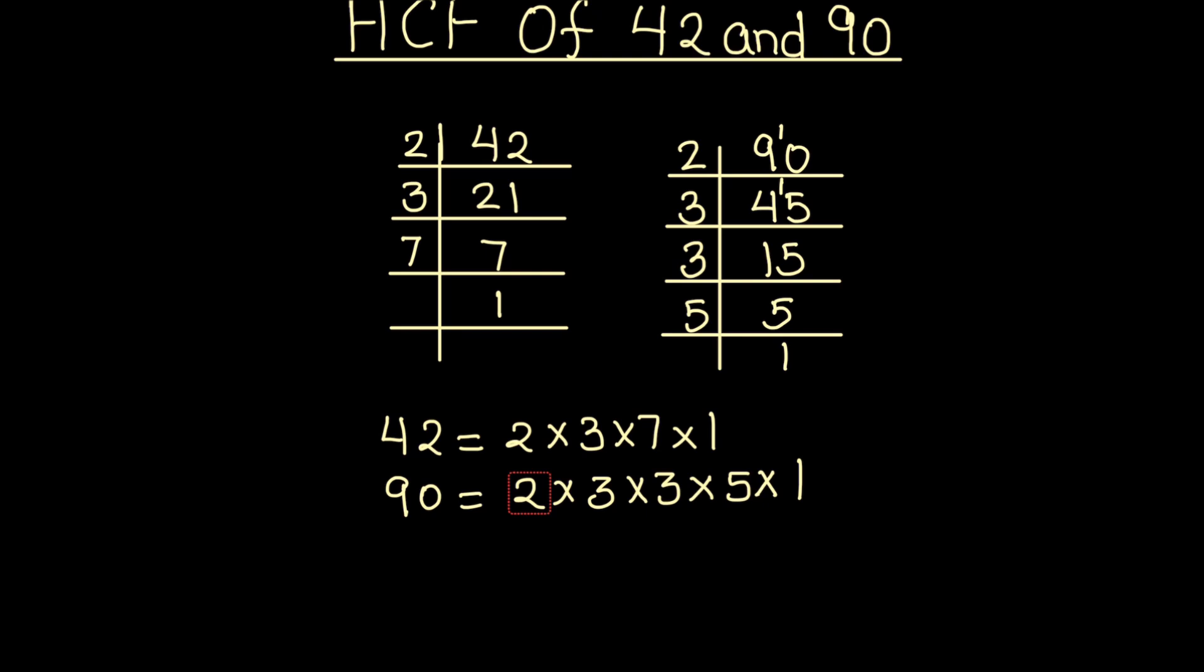The common factors here are 2, as it is in both numbers, and 3 is also common to both numbers. So the common factors between the two numbers are 2 and 3.